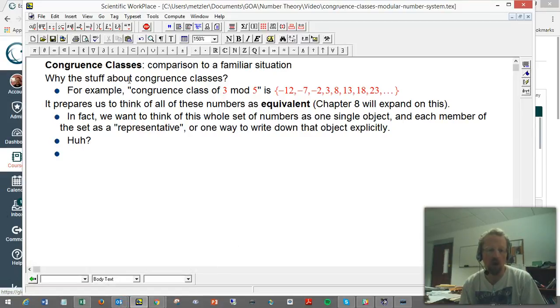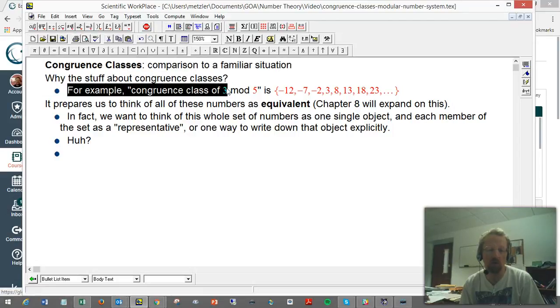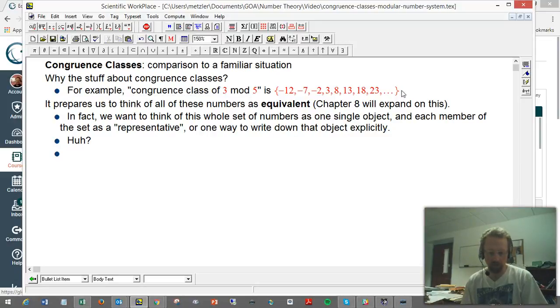Just as an example, the congruence class of the number 3 mod or modulo 5 is just all the numbers that are congruent to 3 modulo 5, which means they all have the same remainder when you divide them by 5. So 3 certainly has a remainder of 3 when divided by 5. 8 does too, 13 does, 18, 23.